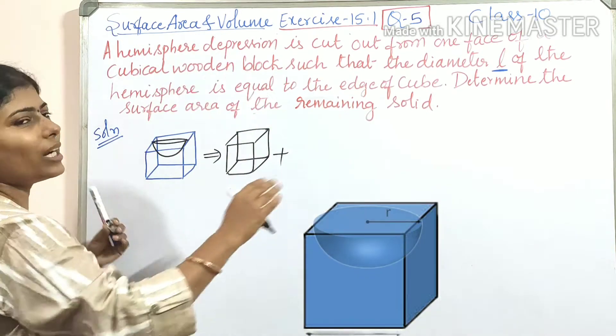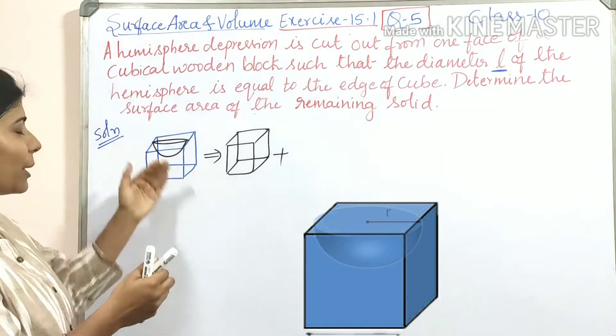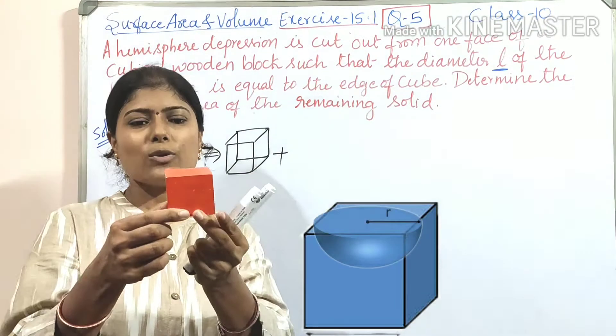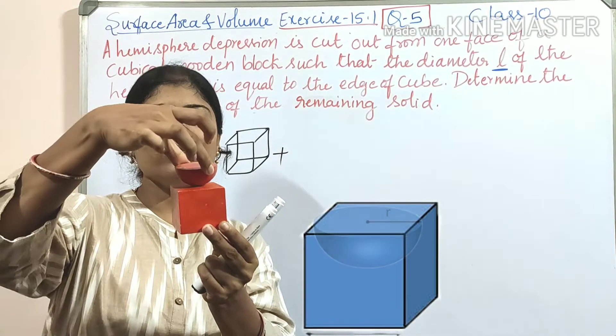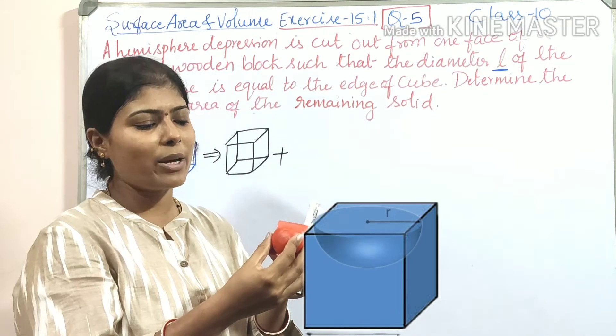You may ask, if we remove that it will be minus. But here the depression remains the same. For example, if you consider a cube, so from this cube we are removing this part. Depression is the same measurement.